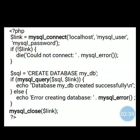mysql_query will always take two arguments. The first argument is your SQL query, and the second argument is the variable that contains the open connection. So there are two arguments passed to the mysql_query function: the first is your variable which contains the query, and the next is the variable which contains the open connection.